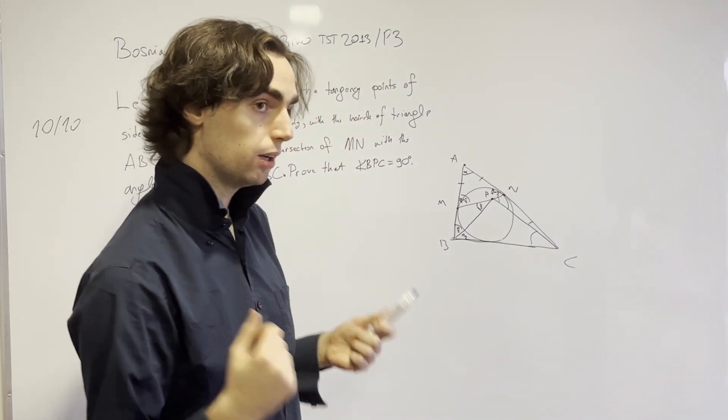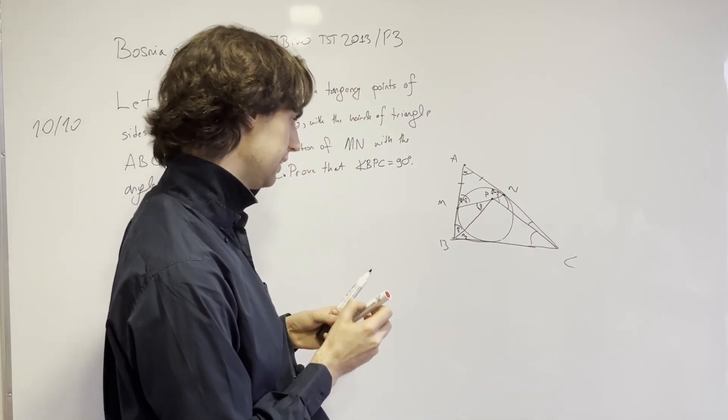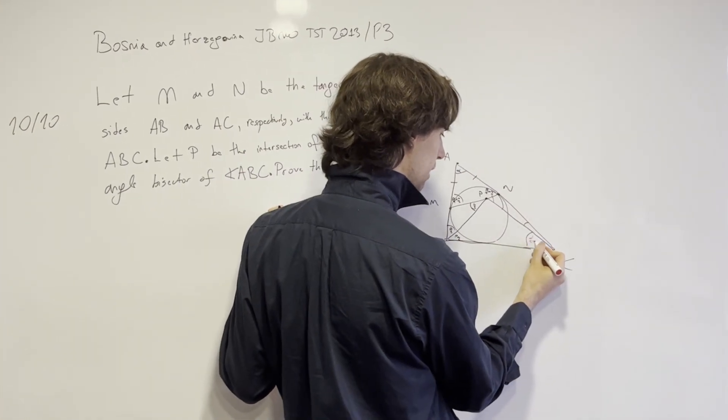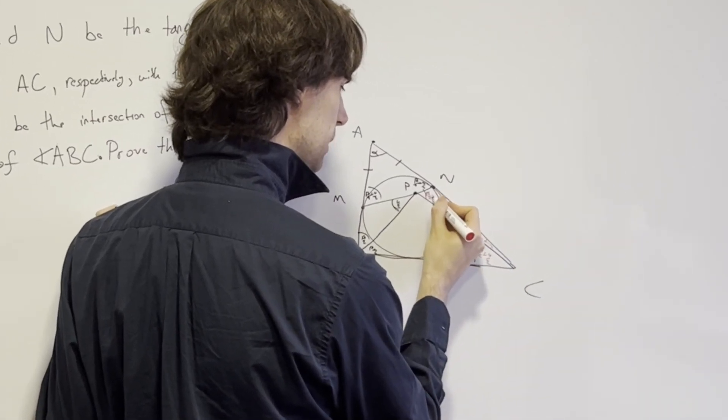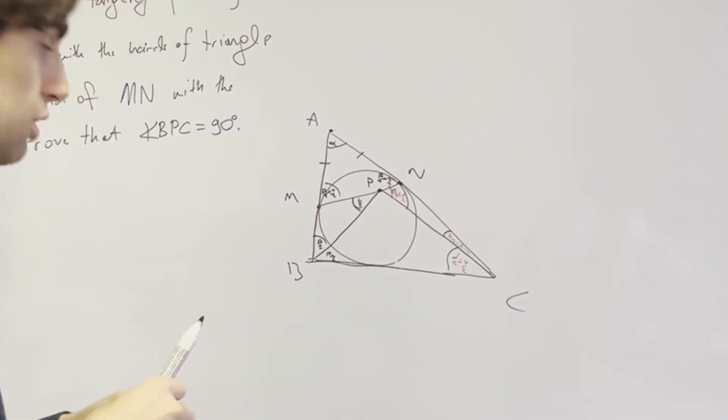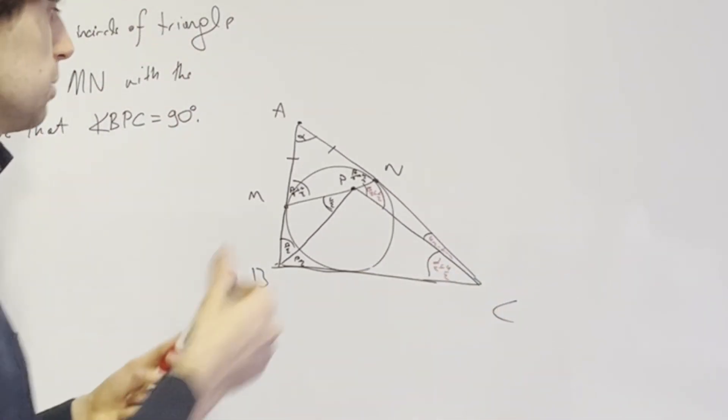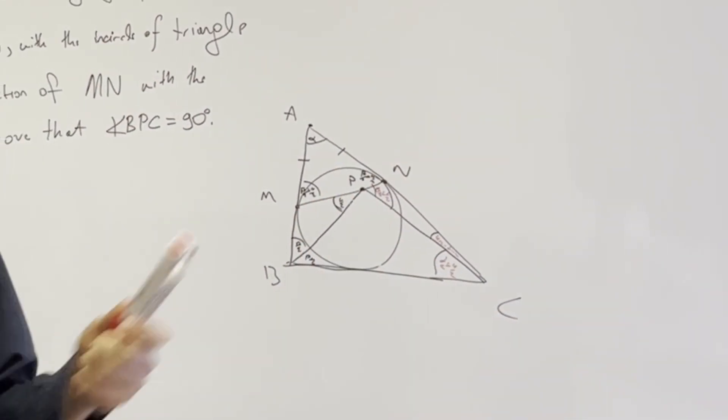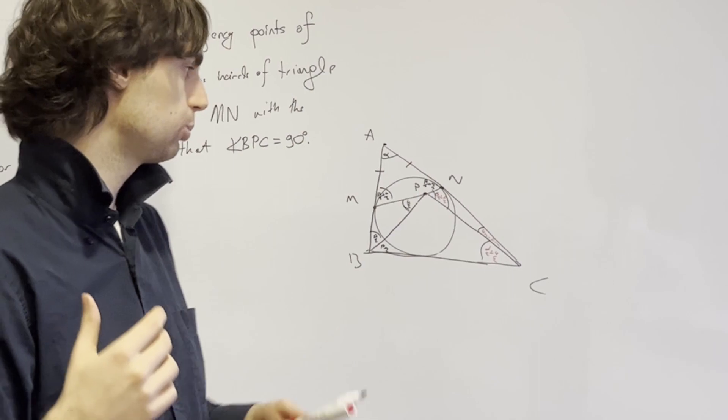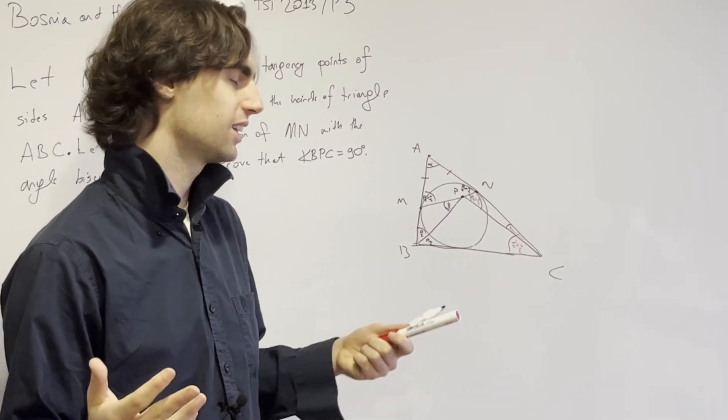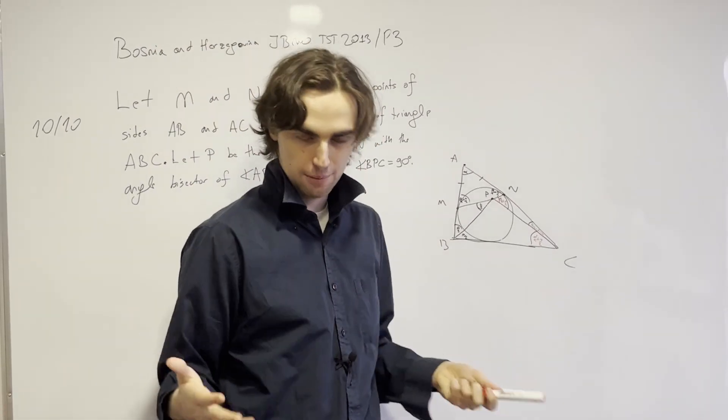One way of going about this problem is asking would anything special hold true if we had this was alpha/2 plus gamma/2, and this was gamma/2 minus alpha/2, and this was beta/2 plus alpha/2? In this diagram, the answer is no. There would be nothing special if this was 90. No four points that are concyclic or lie on a circle, no collinearity or parallel lines. There's nothing really that we have right now.